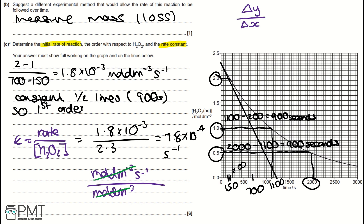To get the 6 marks for this question: plot the tangent at T = 0 for the initial rate (1 mark) and mark two half-lives on the graph (1 mark) — that's 2 graph marks. Then correctly calculate the initial rate of reaction (1 mark), state that constant half-lives mean first order (1 mark) — that's 4 marks total. The rate constant with correct value is the 5th mark, and the correct units (s⁻¹) is the 6th mark.